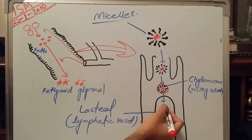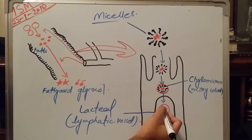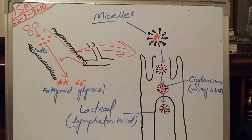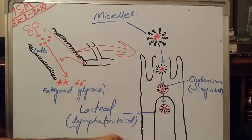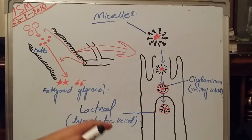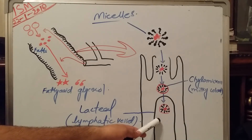This is the protein layer, and these are the bile salts. Once it enters into the lacteal, it moves to the lymphatic system. When the chylomicron enters into the lacteal, the lacteal starts giving a milky color. The milky color of this lacteal — this lymphatic vessel — is due to the color of the chylomicron.